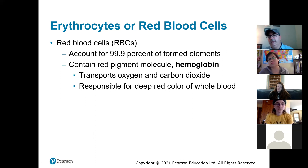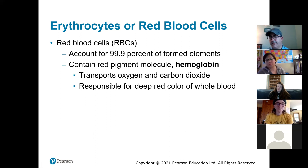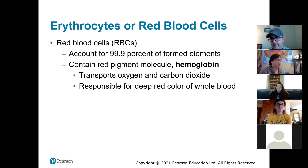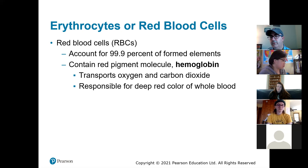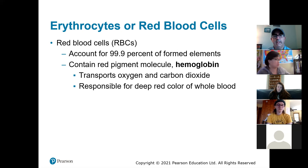That's the liquid part. The other part of the blood is the formed elements, and we've got red blood cells, white blood cells, and platelets. Most of the formed elements are red blood cells. If you took a drop of blood and put it on a microscope slide and looked at it under a microscope, most of what you'd see would be red blood cells. They are responsible for transporting oxygen and carbon dioxide.